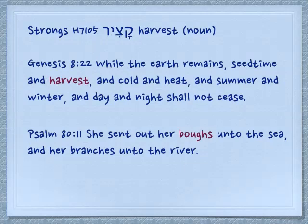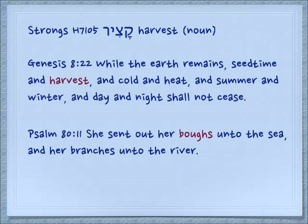Now the actual noun for harvest is katzir. Genesis 8:22 — we saw this verse earlier — while the earth remains, seed time and harvest, and cold and heat, and summer and winter, and day and night shall not cease. In Psalm 80:11 — She sent out her boughs unto the sea and her branches unto the river — the part of the tree that might be harvested or cut off.